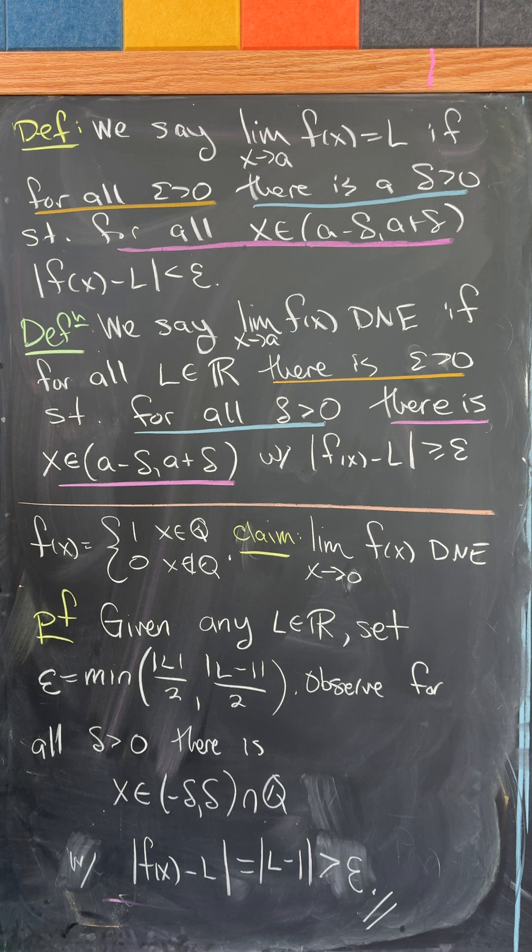Now let's set f of x equal to 1 if x is rational and 0 if x is irrational and we claim that the limit as x goes to 0 of f of x does not exist.